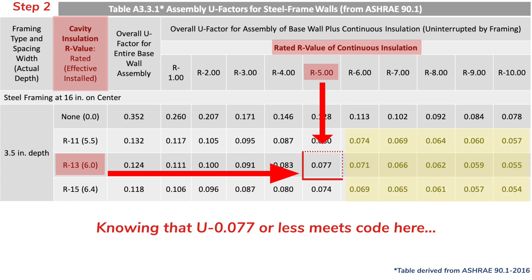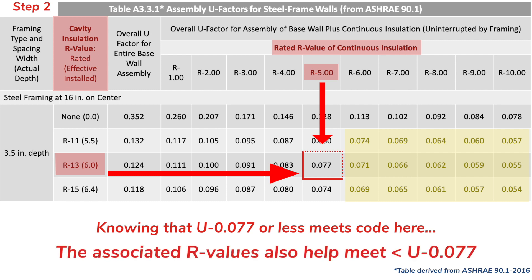And shown here highlighted in yellow, you can see that by increasing the CI and cavity insulation thicknesses, this would also result in a lower U-factor than 0.077. Then you know that the associated R-values would also be compliant options.